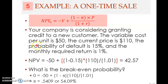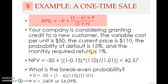Let's apply this formula in an example. Your company is considering granting credit to a new customer. The variable cost per unit is $50, the current price is $110 per unit. The probability of default for this new customer is 15% — meaning there is an 85% chance the customer will pay, and a 15% chance they will not. The monthly required return, or discount rate, is 1%.